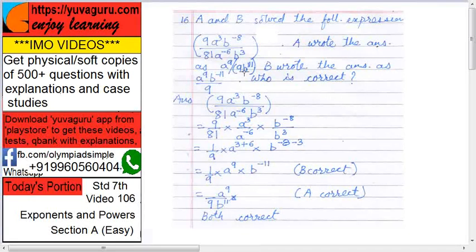So who wrote this answer? B wrote this answer. A raised to 9 into B raised to minus 11 upon 9. So B is correct. Now for A, just bring this B raised to minus 11 down. It becomes the answer of the A. So A is also correct. So both are correct.